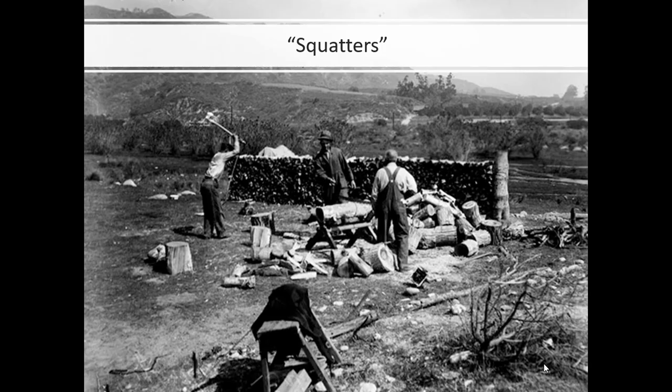You've also got people without land — and you really had to have land to survive in this era since it was all about agriculture. Squatters would just take over a piece of land, refuse to leave, work it, and some ended up owning it. There were also redemptioners, similar to indentured servants but already in America. Since they didn't need passage paid overseas, they could negotiate better contract terms.